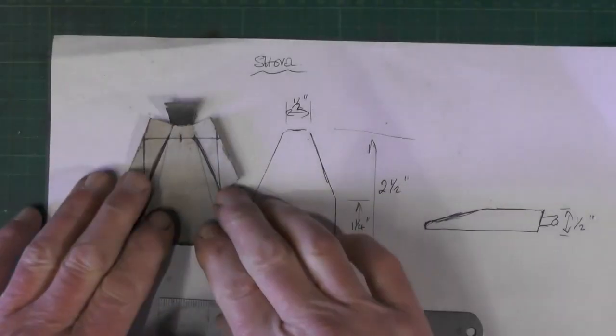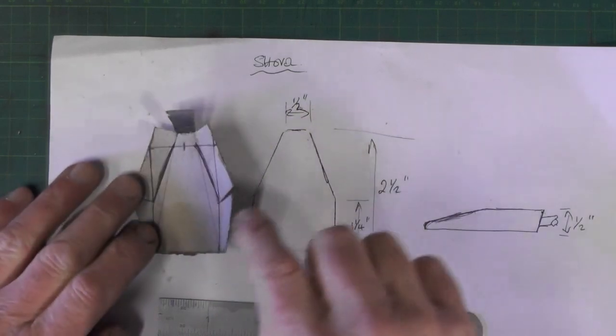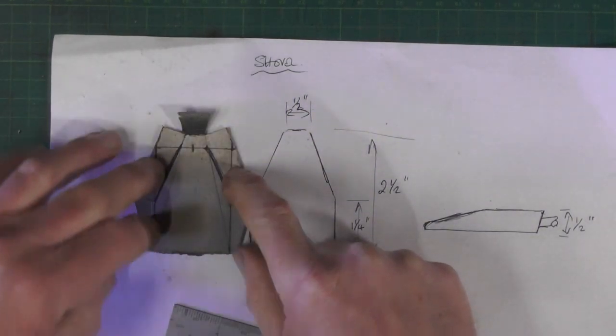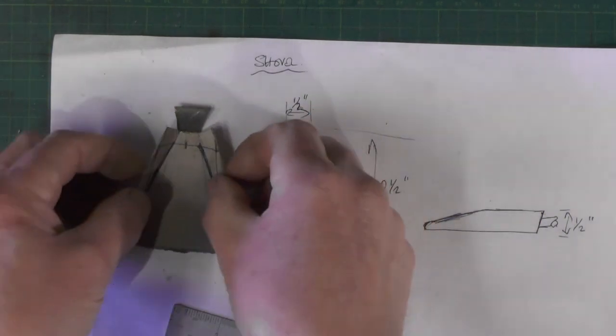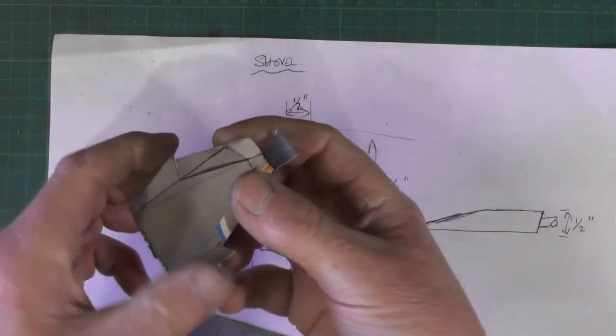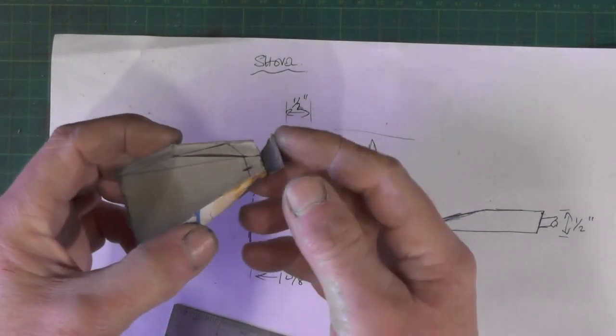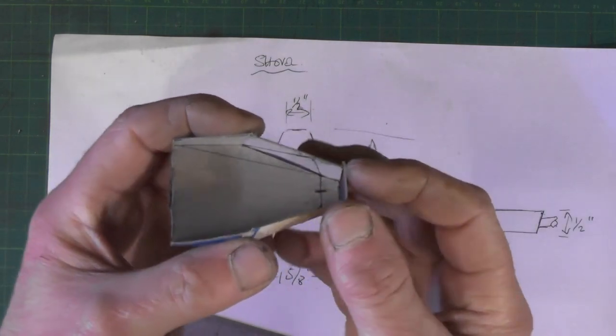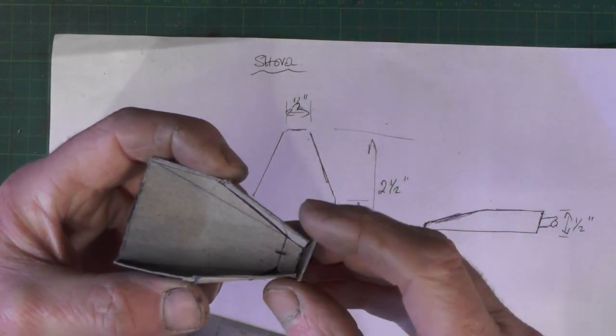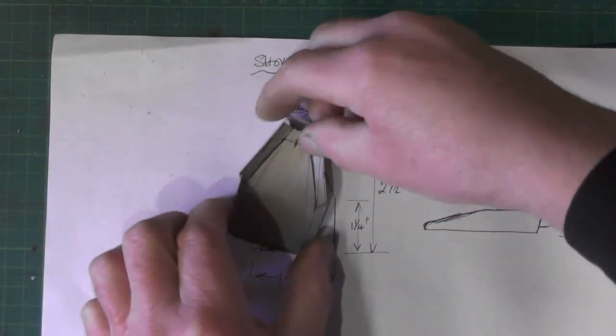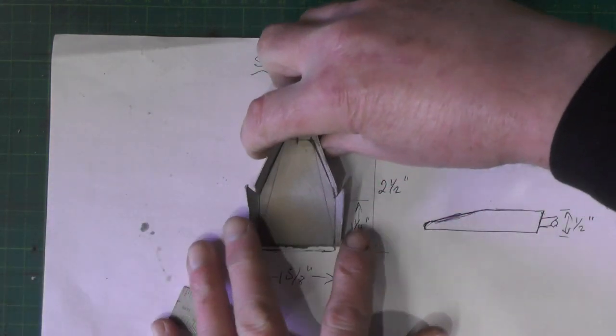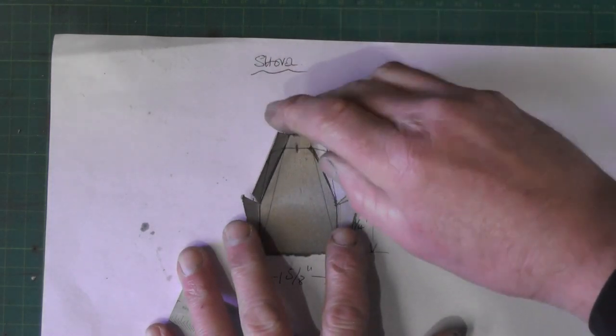Right, so I've just been cutting my cornflake packet up, and that's the shape I've come up with in cardboard. So when it's all folded up, that's the sort of shape it's going to turn out at, which is going to give me roughly the dimensions that I've drawn on that sheet of paper.